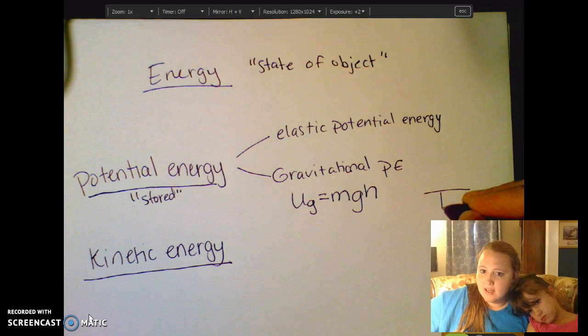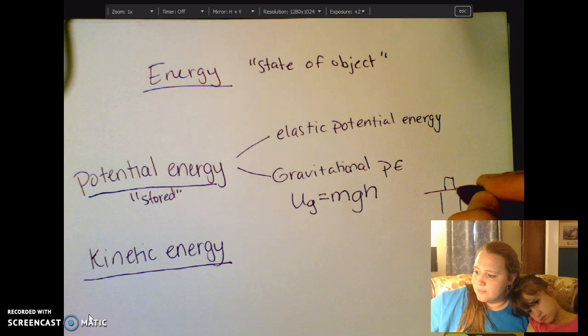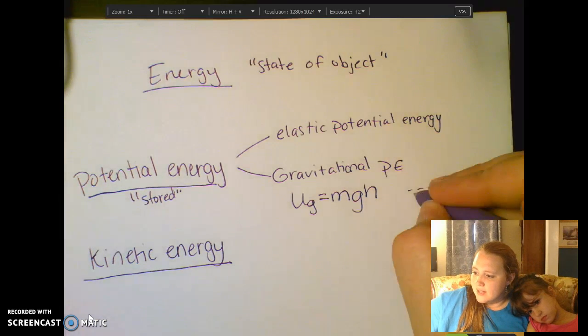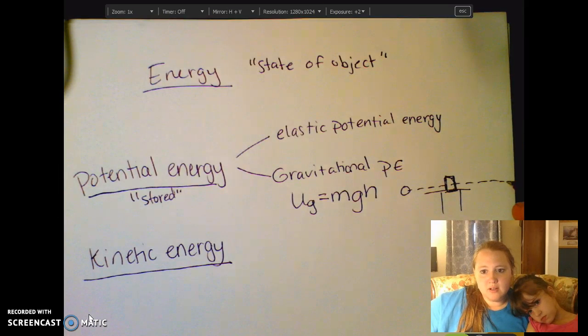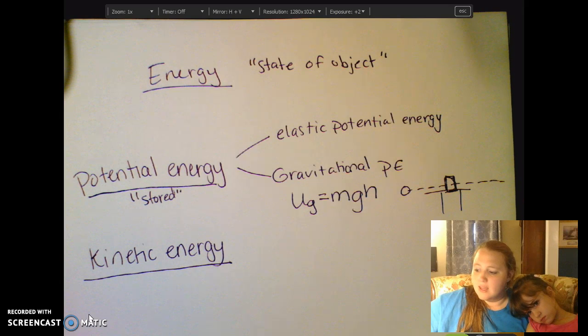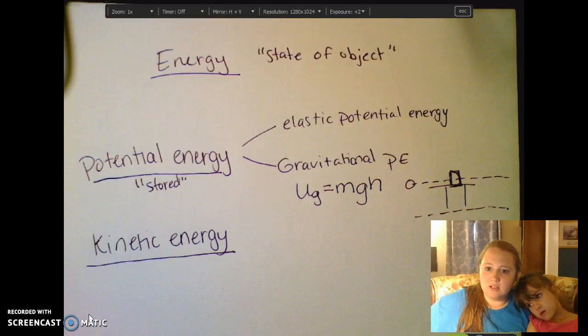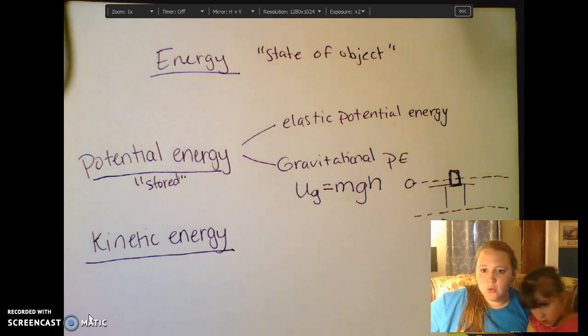What I mean by reference point is, let's say I have a table and an object is sitting on a table here. So if I were to put my reference point right where the object is, then that means that this is 0 meters. So looking at my object, it has 0 gravitational potential energy.